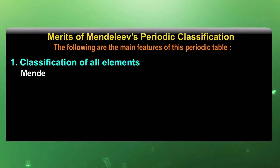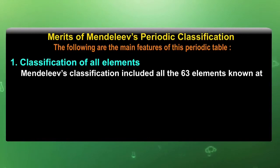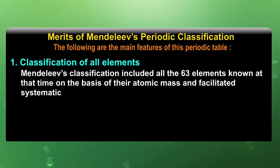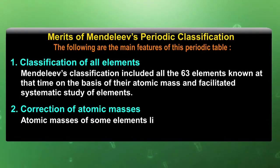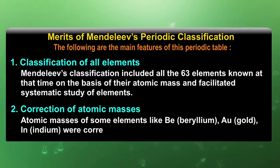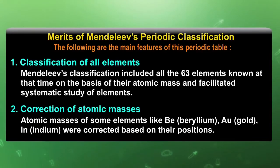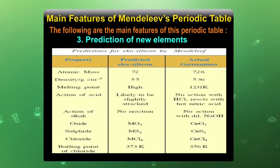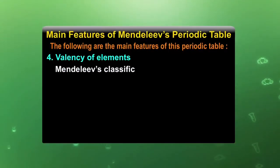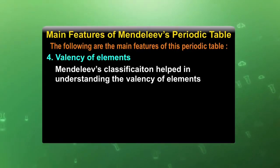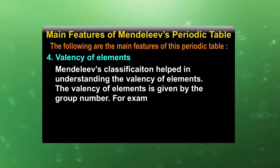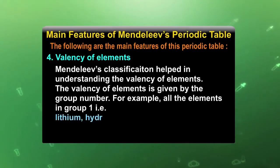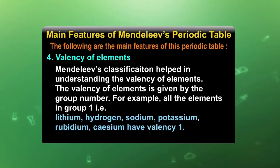Mendeleev's classification included all 63 elements known at that time on the basis of their atomic masses and facilitated systematic study of elements. Correction of atomic masses: atomic masses of some elements like beryllium, gold, and indium were corrected based on their position. Prediction of new elements: this table indicates different elements predicted as new elements by Mendeleev. Valency of elements: Mendeleev's classification helped in understanding the valency of elements — the valency is given by the group number. For example, all elements in group 1 — hydrogen, sodium, potassium, rubidium, and cesium — have valency 1.